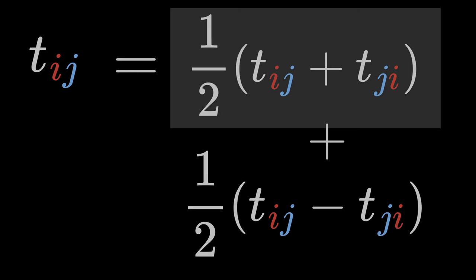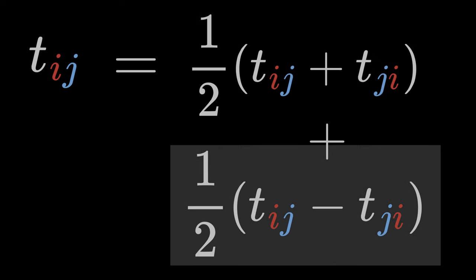The first summand is the symmetric part of the tensor Tij, and the second summand is the antisymmetric part.